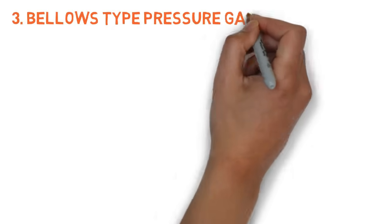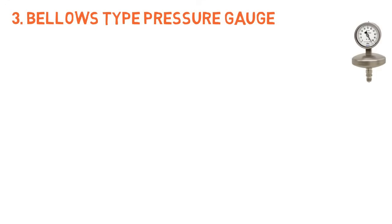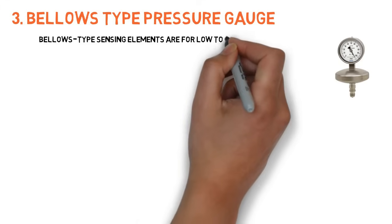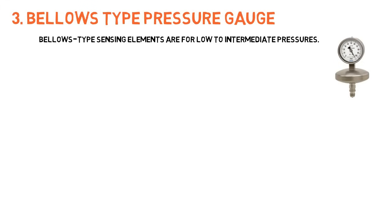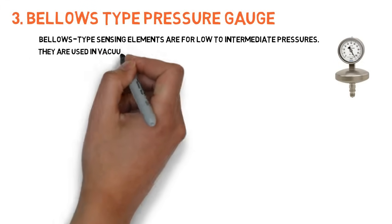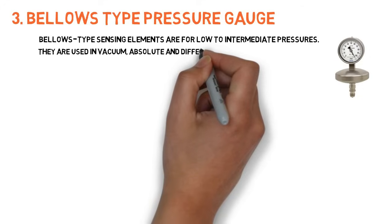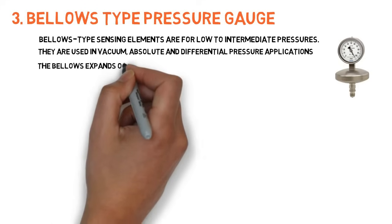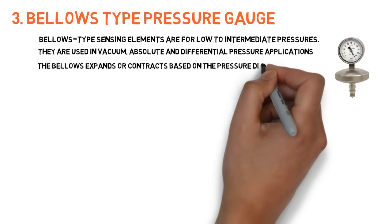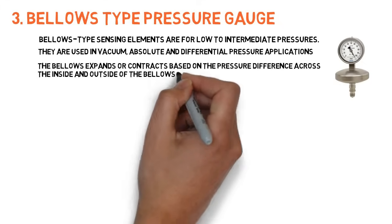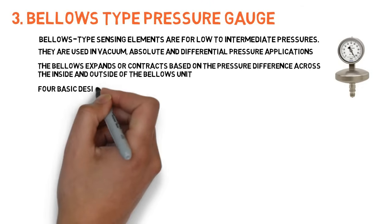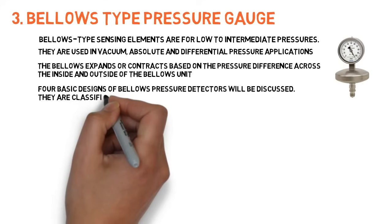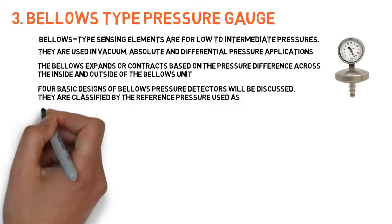Bellows type pressure gauge. Bellows type sensing elements are for low to intermediate pressures. They are used in vacuum, absolute, and differential pressure measurement applications. The bellows expands or contracts based on the pressure difference across the inside and outside of the bellows unit. Four basic designs of bellows pressure detectors are classified by the reference pressure used, as absolute, gauge, or differential pressure detectors.